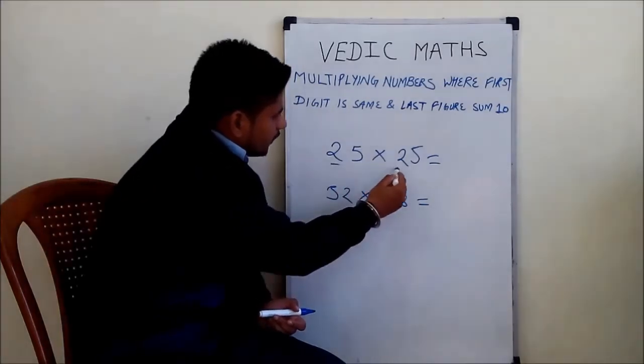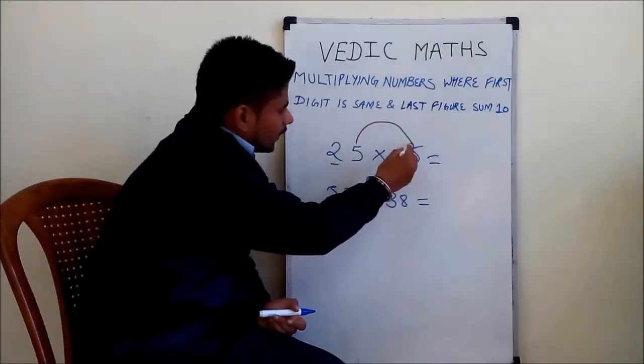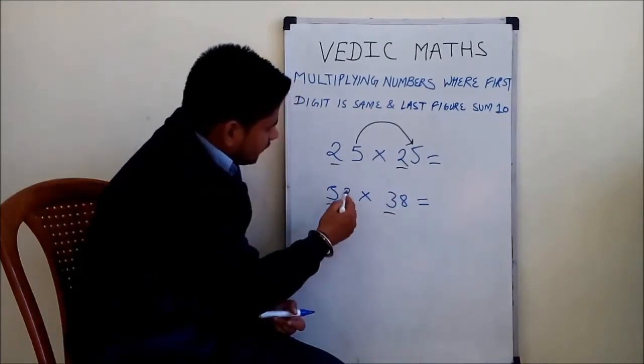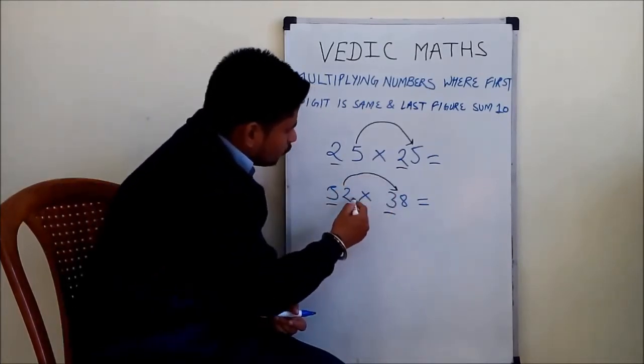What we notice: the first digit is the same, that is 2, and the last digits sum up to 10, that is 5 plus 5 equals 10. Here also, the first digit is the same, that is 3, and the last digits sum up to 10, that is 2 plus 8 equals 10.